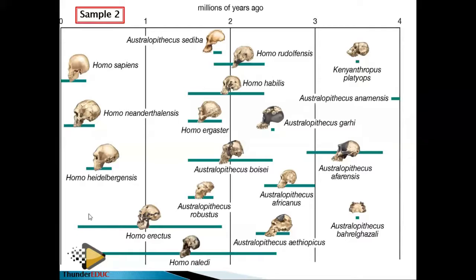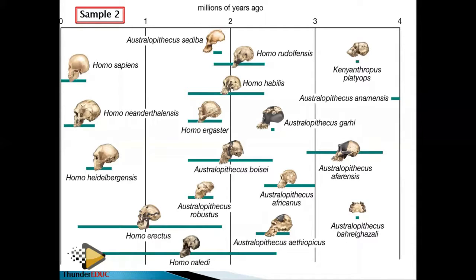To find how long Homo habilis existed, draw a line touching the start and end of its range on the scale. From where it appears to where it ends — for example, from 2.5 to 1.5 — so 2.5 minus 1.5 equals one million years.